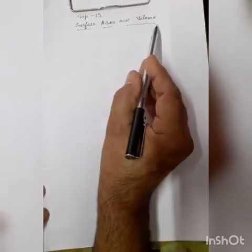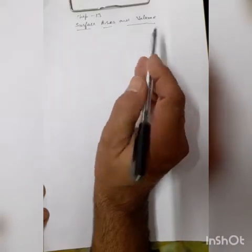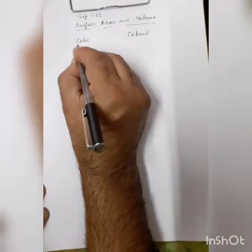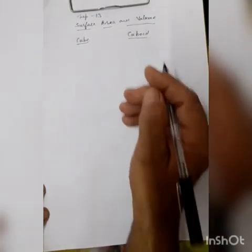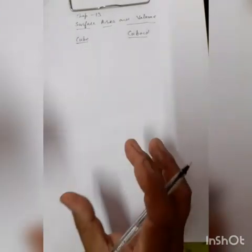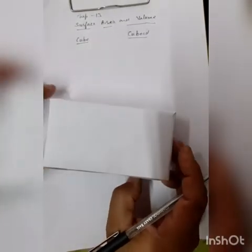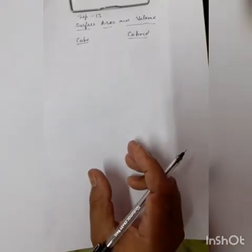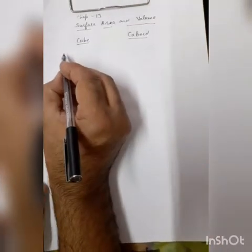In this topic, first of all we will find the surface area of cube and cuboid. Cube and cuboid are two shapes. In a cube, its length, breadth, and height are all equal. In a cuboid, length, breadth, and height are not equal. So this shape is called a cuboid.